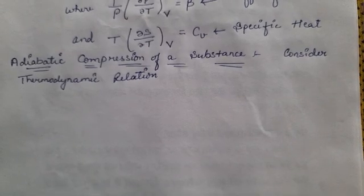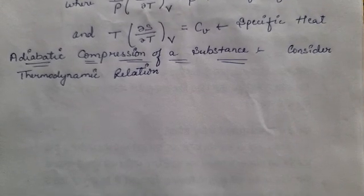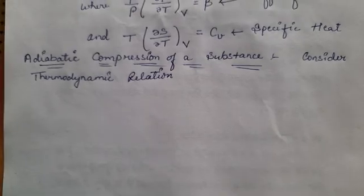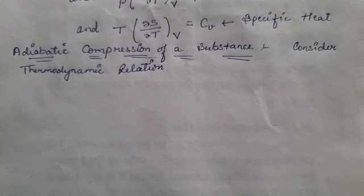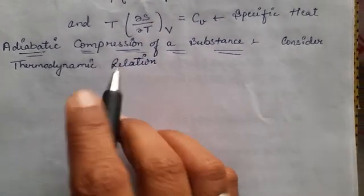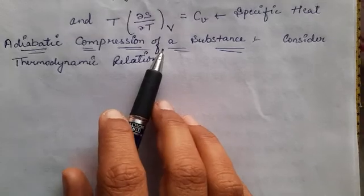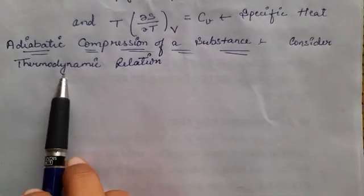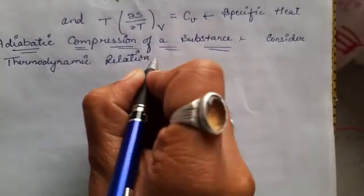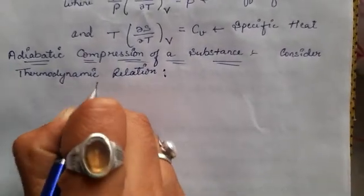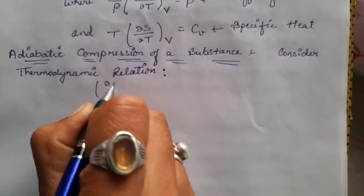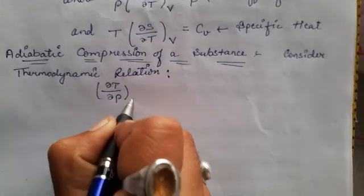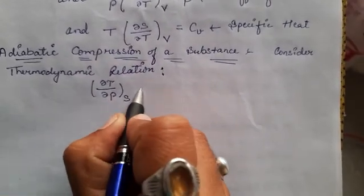Now we derive the relation for adiabatic compression of a substance. For that we analyze the variation in temperature during adiabatic compression of a gas. We again consider Maxwell's thermodynamic relation: (∂T/∂P) at constant entropy equals the variation of volume with respect to entropy at constant pressure.